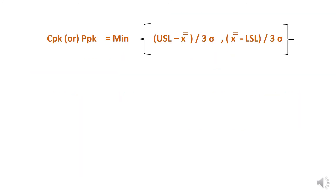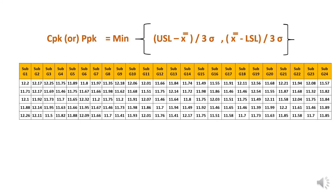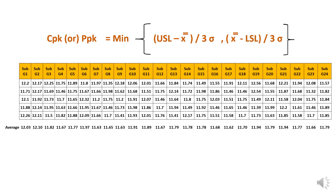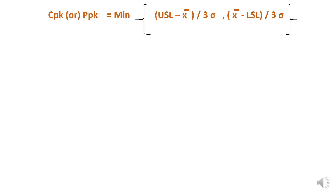Now we will calculate Cpk and Ppk. As per the formula, we already have USL, sigma, and LSL. The only remaining parameter is X-double-bar. To calculate X-double-bar, we first take the average of each individual subgroup, and then take the average of all 24 subgroup averages. The X-double-bar comes to approximately 11.7.